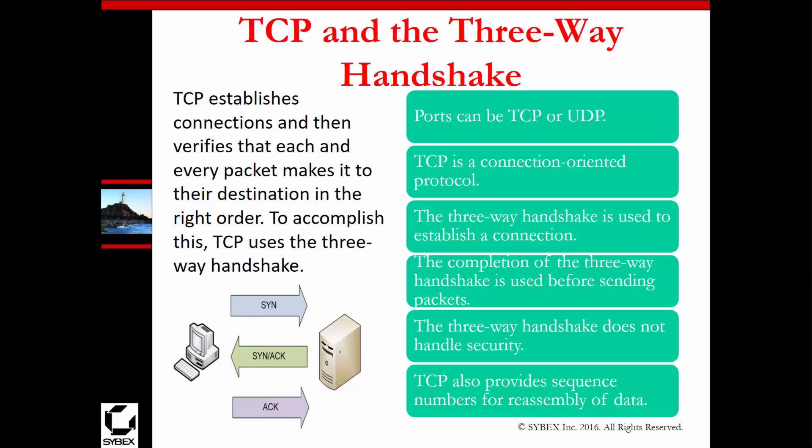Part of this ties back into the TCP three-way handshake, because that handshake actually secures the connection — SYN, SYN-ACK, and ACK. So if you have that secured handshake, you have a certain level of security, but it's not absolute. Make sure you understand that TCP is connection-oriented. It starts with a three-way handshake and ends with a handshake. The completion of the three-way handshake happens before sending anything, but the three-way handshake does not handle security — it just creates the initial connection and terminates it at the end.